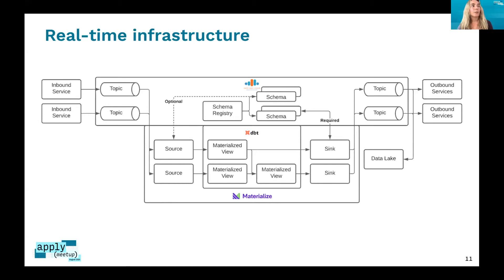This is what our infrastructure looks like. We have Confluent Cloud managing our schema registries and Kafka topics. Going through the abandoned cart use case, we have add-to-cart and checkout events coming into these topics, which are then read into source objects in Materialize. DBT manages all of the materialized views — essentially SQL queries where we write SQL to join and transform the data and apply logic to determine if a user has an abandoned cart. Once we have that, we send data out of Materialize using a sink object, which writes back to another topic that can be read by any outbound service — in this case, sending notifications to users with an abandoned cart.